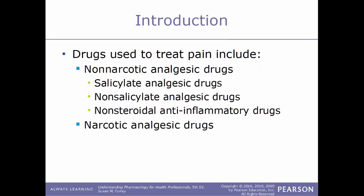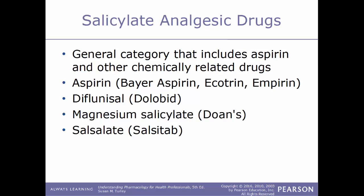When it comes to non-narcotic drugs, there are three main categories: salicylate analgesic drugs, non-salicylate analgesic drugs, and NSAIDs — the non-steroidal anti-inflammatory drugs. The salicylate analgesic drugs is a general category that includes aspirin and other chemically related drugs. Common trade names include Bayer aspirin, Ecotrin, and Empirin. Other drugs in this category include diflunisal, sold under the name Dolobid; magnesium salicylate, also known as Doan's; and salsalate, sold under the trade name Salsatab.